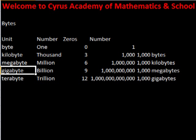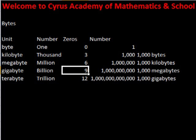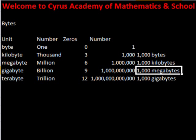Next is the gigabyte. It has a billion in it. It has nine zeros. And it has a thousand megabytes.